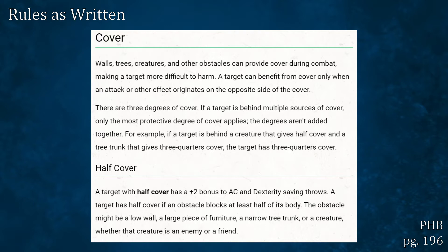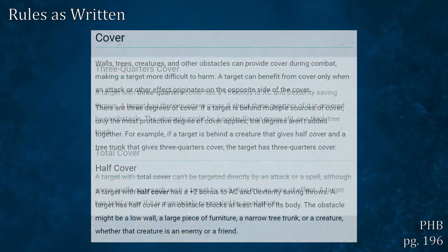Half cover: a target with half cover has a plus two bonus to AC and dexterity saving throws. A target has half cover if an obstacle blocks at least half of its body. The obstacle might be a low wall, a large piece of furniture, a narrow tree trunk, or a creature, whether that creature is an enemy or a friend.